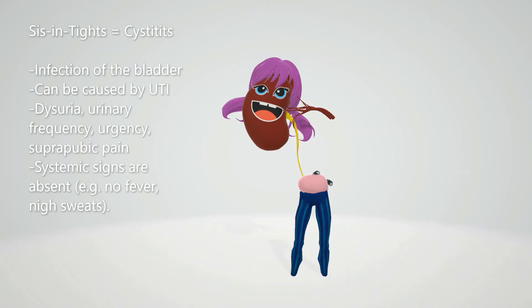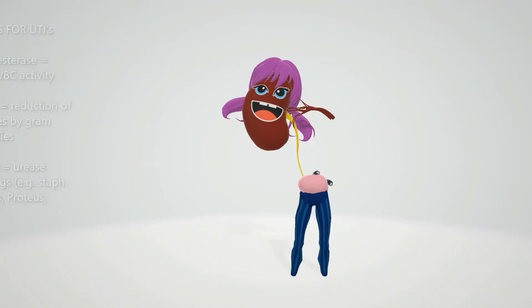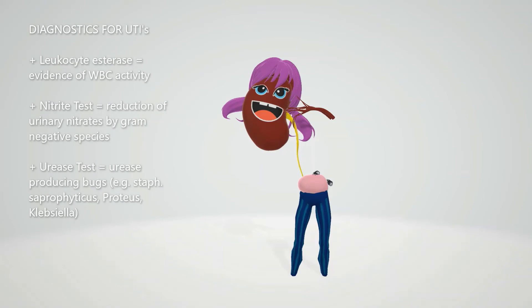Diagnosis of cystitis as well as urinary tract infections is made with white blood cells in the urine, due to the infection. Other diagnostic markers include positive leukocyte esterase, since this is evidence of white blood cell activity; positive nitrite test, due to the reduction of urinary nitrates by gram-negative bacterial species such as E. coli; and positive urease test, since this tells us there are urease-producing bugs such as Staphylococcus saprophyticus, Proteus, and Klebsiella.